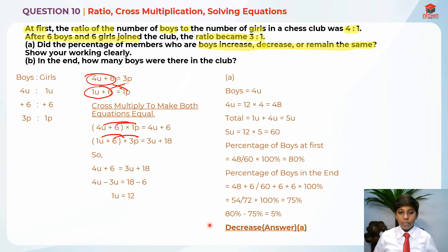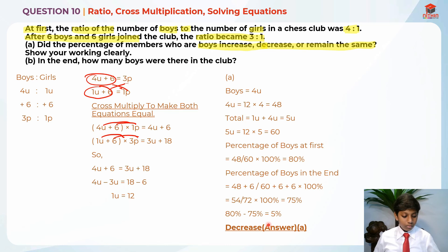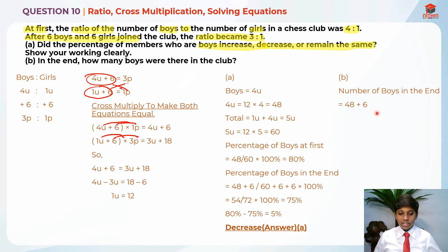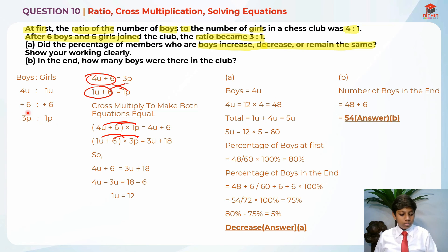That is the answer for part A. Now for part B, they're asking how many boys were there in the club in the end. This is straightforward. We just take the number of boys in the end: 48 plus 6, which gives us 54 as the answer for part B.